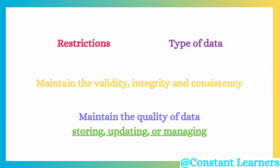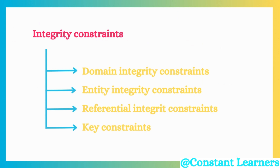We are imposing restrictions on the type of data being stored inside the database to maintain the validity, integrity, and consistency of that data — in other words, to maintain the quality of the data, not just while storing it, but also while updating or managing it. There are four different types of integrity constraints: domain constraints, entity constraints, referential integrity constraints, and key constraints.